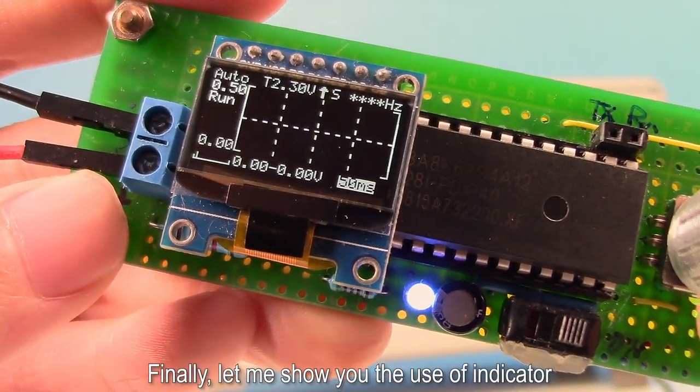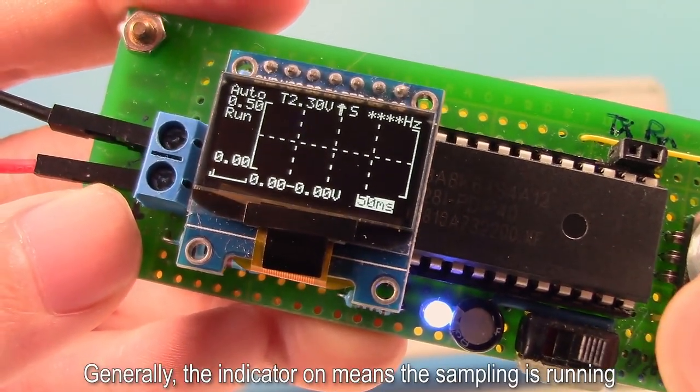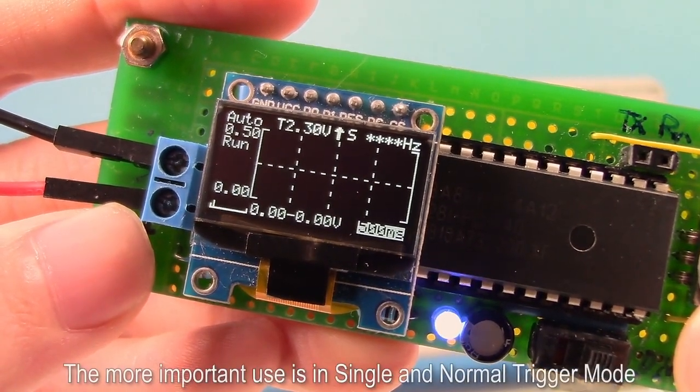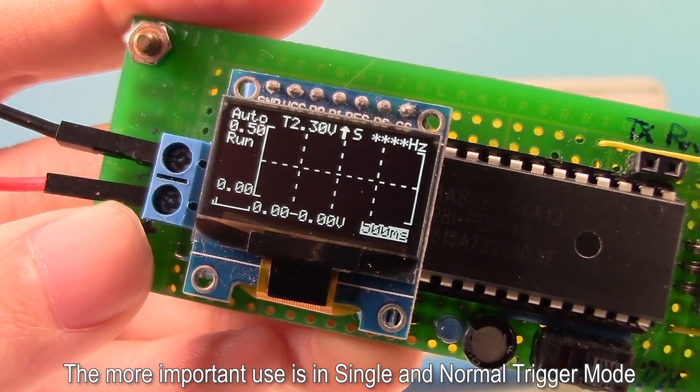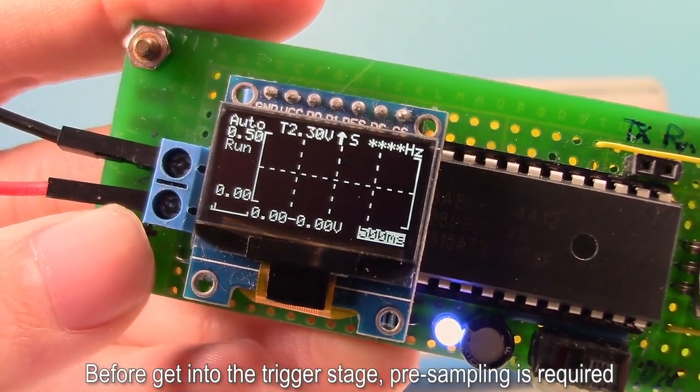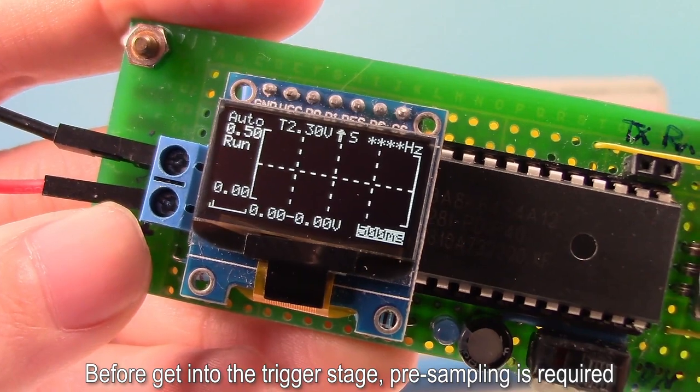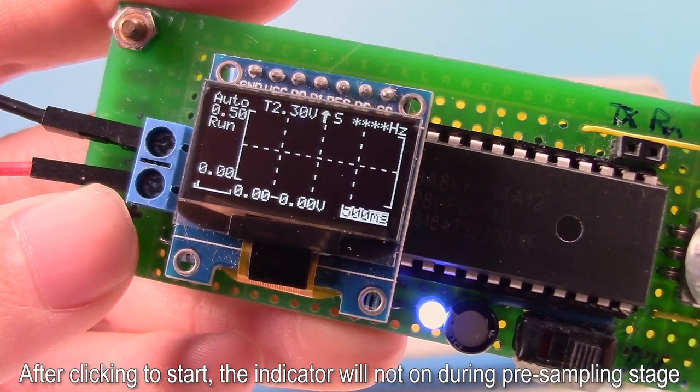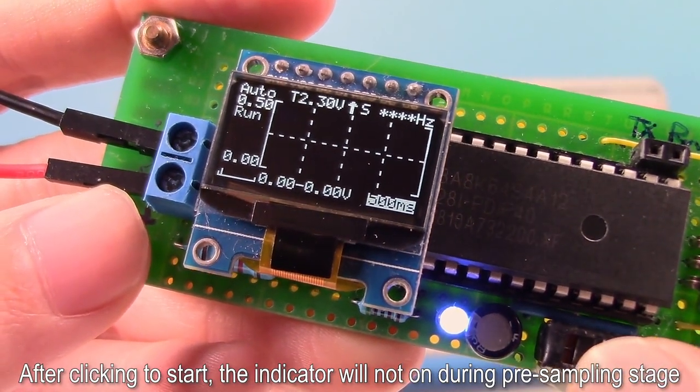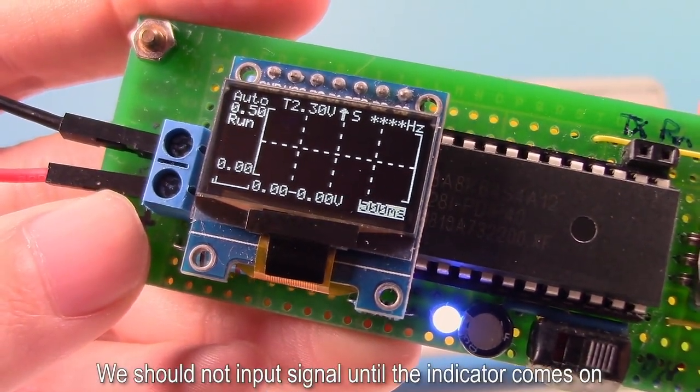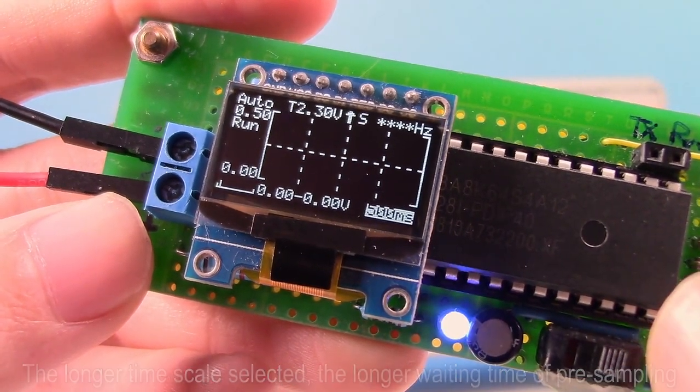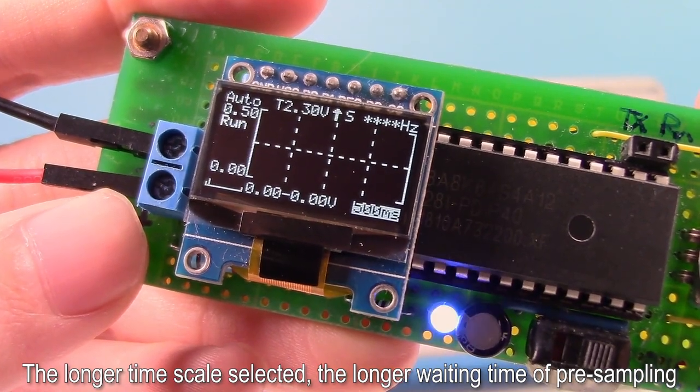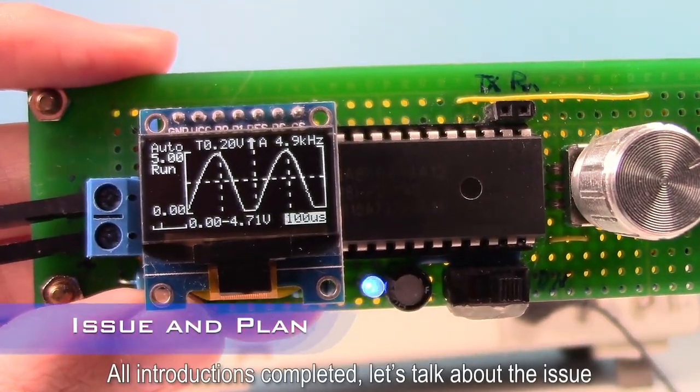Finally, let me show you the use of indicator. Generally, the indicator on means the sampling is running. The more important use is in single and normal trigger mode. Before getting into the trigger stage, pre-sampling is required. After clicking to start, the indicator will not on during pre-sampling stage. We should not input signal until the indicator comes on. The longer time scale selected, the longer waiting time of pre-sampling. All introductions completed, let's talk about the issue.